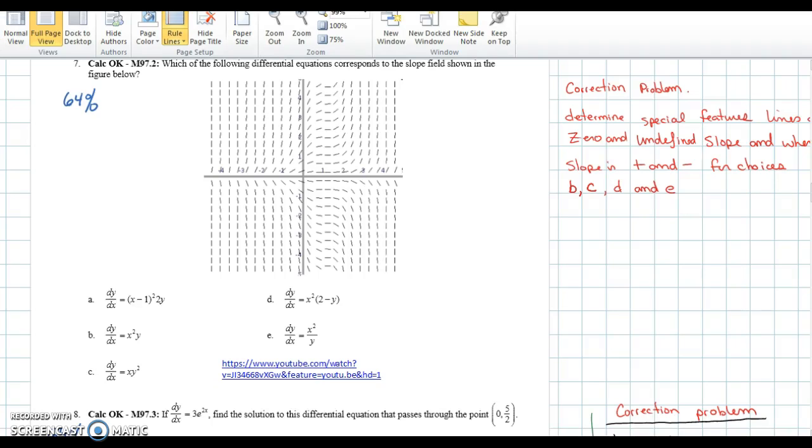In this problem you've been given a slope field and a series of possible equations to match. First of all I see that we always have zero slope down this line. Notice we're right at 1 so that means when x equals 1, m equals 0.